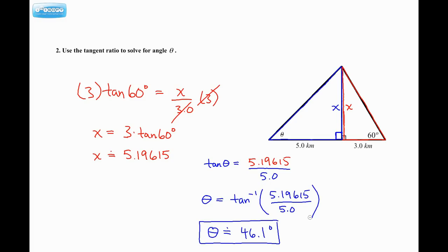So this is an example whereby we have to go to a different shape to get the information that we need to solve for this blue triangle right here. So about 46.1 degrees.